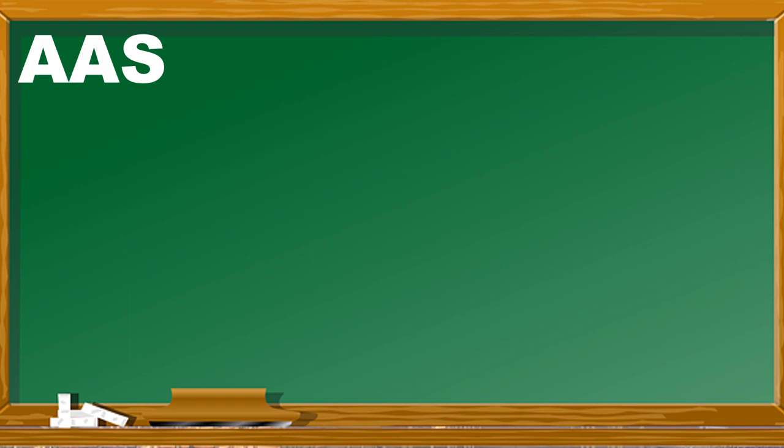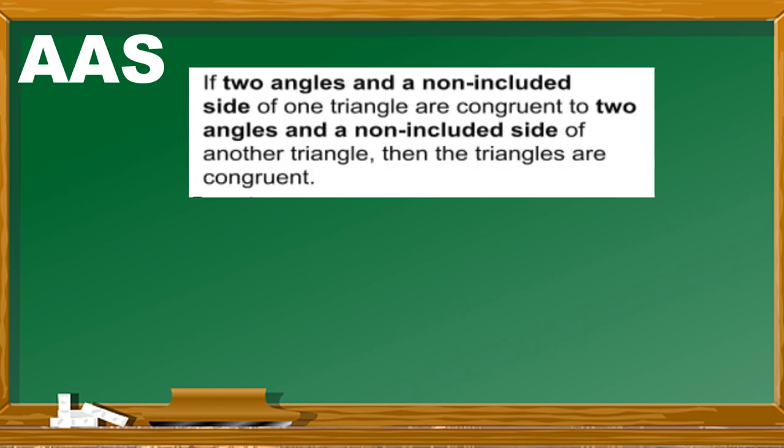This next one is not a postulate but a theorem — AAS, which stands for Angle-Angle-Side. In some books, textbooks, or internet references it may be written as SAA, but for uniformity, since most references use AAS, we will follow the majority. If two angles and a non-included side of one triangle are congruent to two angles and a non-included side of another triangle, then the triangles are congruent.